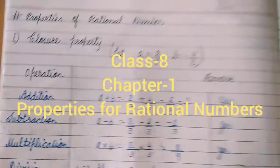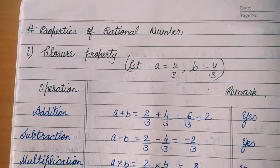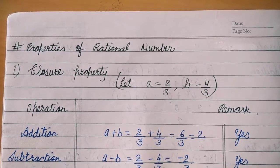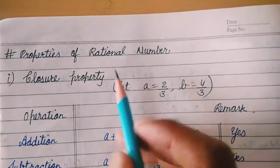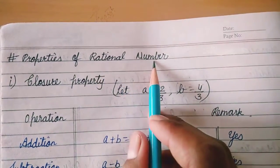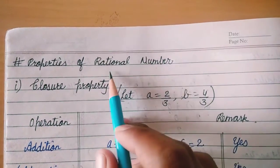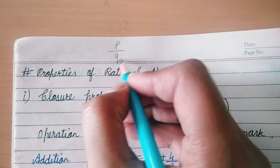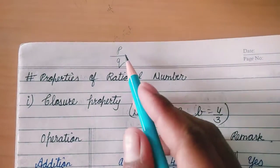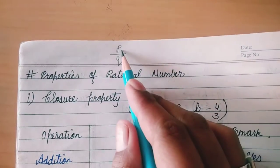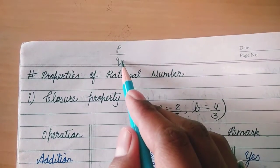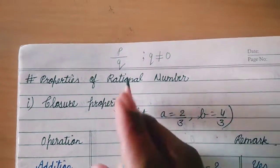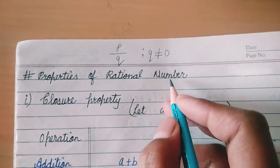Hello students, welcome back to maths class. In this video we will see the properties of rational numbers for class 8th. So firstly we will revise what rational numbers are. Rational numbers can be represented in the form of P upon Q, where P and Q both are integers and Q will not be equal to 0. That kind of numbers is known as rational numbers.